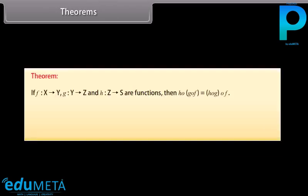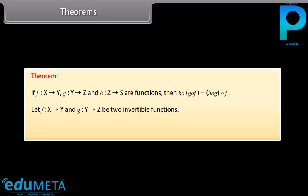Theorems: If functions f from X to Y, g from Y to Z, and h from Z to S are functions, then h∘(g∘f) = (h∘g)∘f. Let function f from X to Y and function g from Y to Z be two invertible functions. Then g∘f is also invertible with inverse (g∘f)⁻¹ = f⁻¹∘g⁻¹.